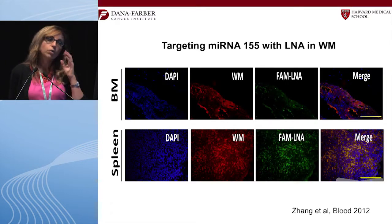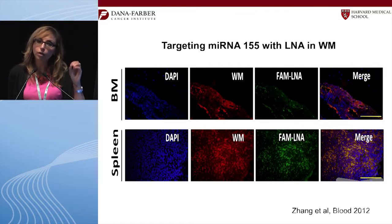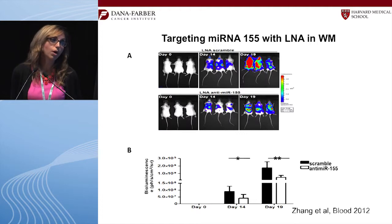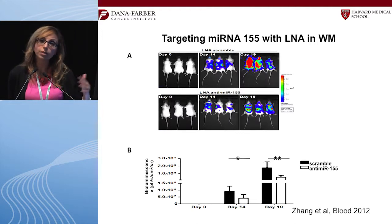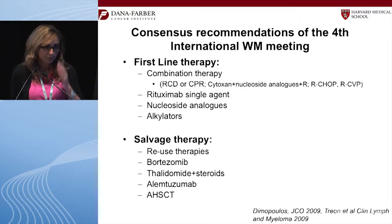The locked nucleic acid also targets Waldenström cells directly — by immunofluorescence, the Waldenström cells appear in red and the locked nucleic acid in green, and when merged you can see the LNA going inside those cells and inducing cell death. In the bioluminescence treatment model, treated mice showed less tumor growth and better control of Waldenström cells. Potentially, in the future, patients with high miR-155 — whether CLL, Waldenström, or other lymphomas — could receive personalized miR-155 inhibitor therapy.